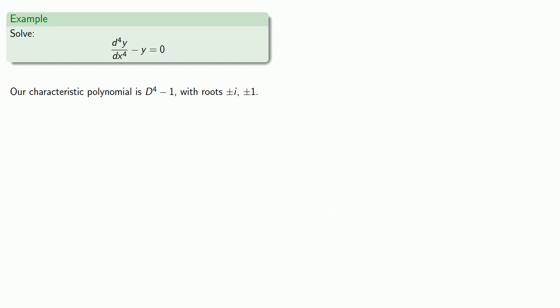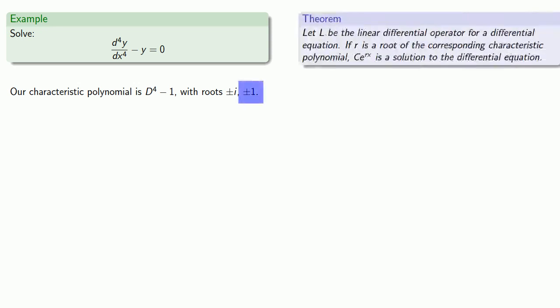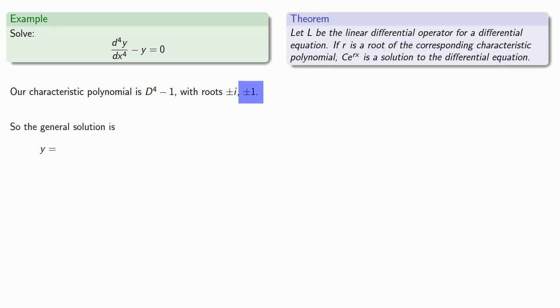And so once we have the roots of our characteristic polynomial, we can translate these into components of our general solution. The roots plus or minus 1, because they are real, give us these solutions c₁*e^x and c₂*e^(-x).